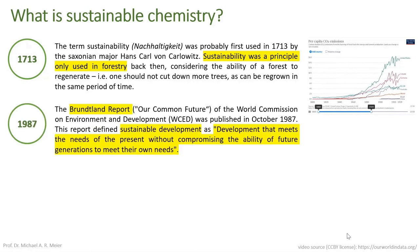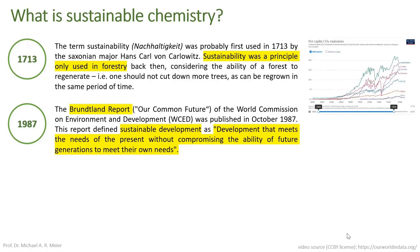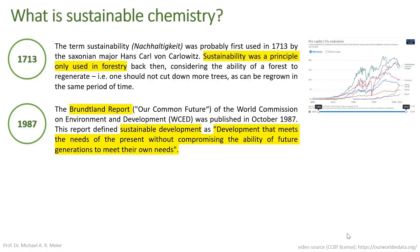An important benchmark was the Brundtland Report, issued in 1987, where sustainable development was first formally communicated. A key phrase was coined there: development that meets the needs of the present without compromising the ability of future generations to meet their own needs — somewhat similar to the original forestry concept.